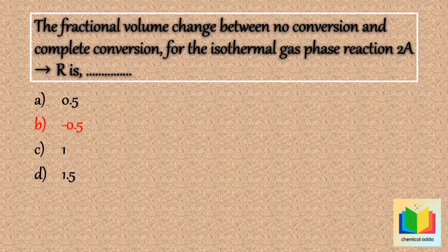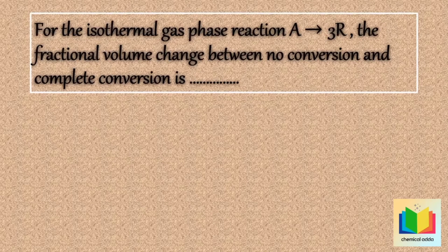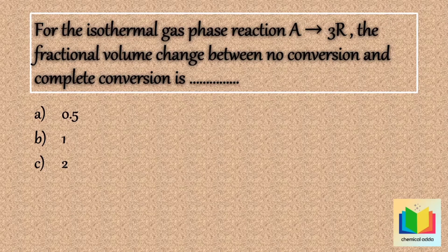Next question: for the isothermal gas phase reaction A gives 3R, the fractional volume change between no conversion and complete conversion is — option A: 0.5; option B: 1; option C: 2; option D: −2.